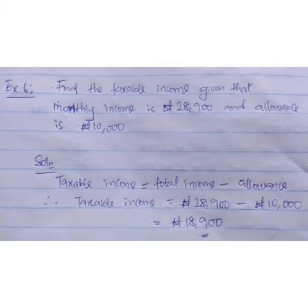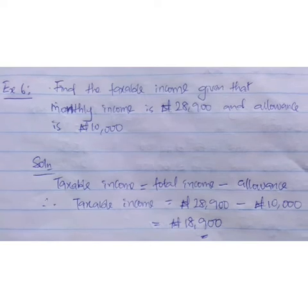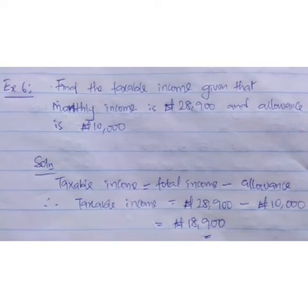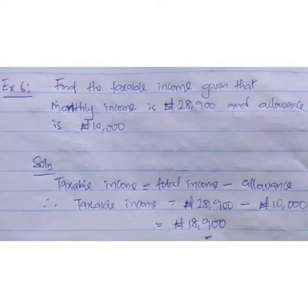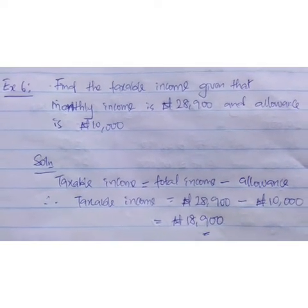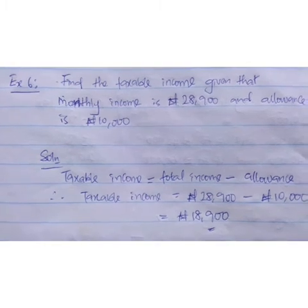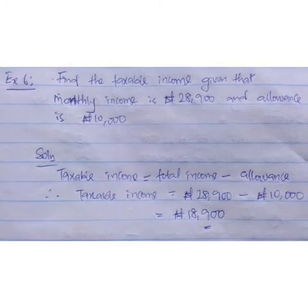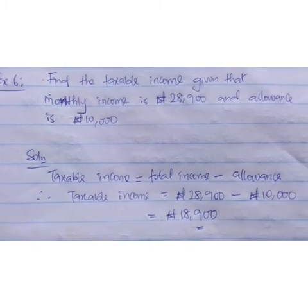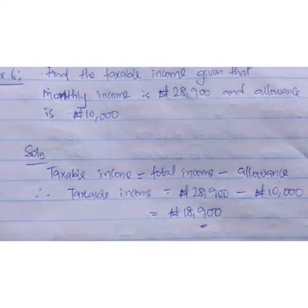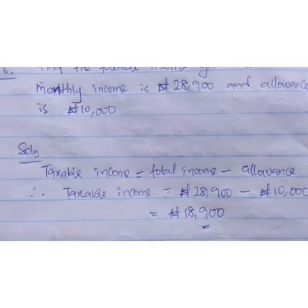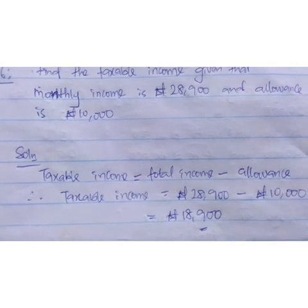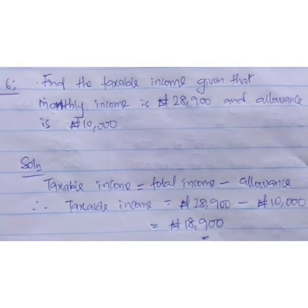Example 6: Finding taxable income. Given that monthly income is 28,900 naira and allowance is 10,000 naira. Taxable income equals total income minus allowance, which gives us 28,900 minus 10,000 naira, amounting to 18,900 naira.